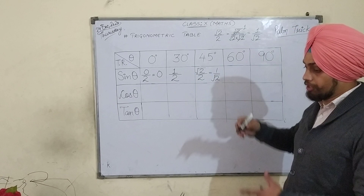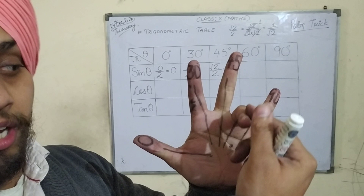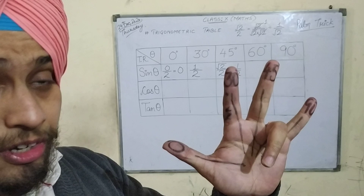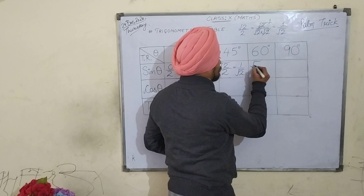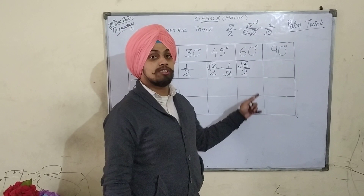Now let's move to sin 60 degree. 60 degree is written on this finger, so I will bend this finger and see how many fingers are to the left of it — there are 3 fingers. So I will take the square root of 3 and divide it by 2. So the value of sin 60 degree is √3 by 2.